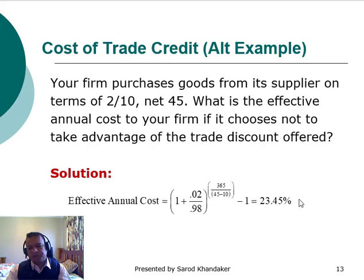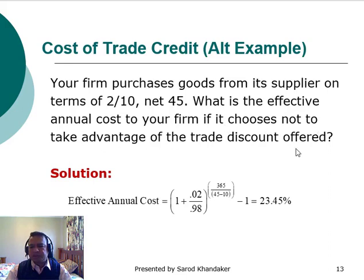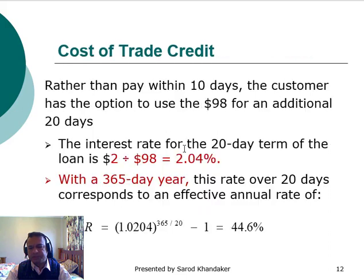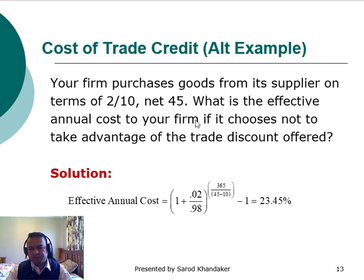Alternative example: your firm purchases goods from its supplier on terms of 2/10 net 45. What is the effective annual cost if you choose not to take advantage of the trade discount? The solution is similar to the previous example: 2/98 gives the interest rate for the period, and the net period is 45 days, so the discount period is 35 days. Solving gives an effective annual cost of 23.45%.